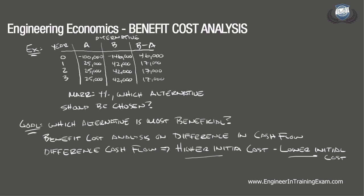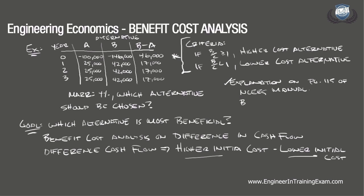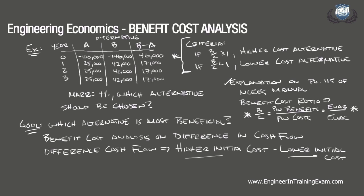When analyzing the benefit cost ratio using the cash flow represented by the difference between the two alternatives, the following selection criteria is used. If the benefit cost ratio is greater than or equal to 1, then we will deem the higher cost alternative as acceptable. If the benefit cost ratio is less than 1, then we will deem the lower cost alternative as acceptable. A short explanation can be referenced on page 115 of the NCEES Supplied Reference Handbook. B over C equals present worth of benefits divided by present worth of costs, which equals equivalent uniform annual benefits divided by equivalent uniform annual costs.